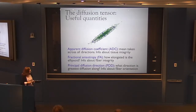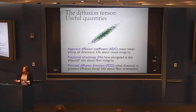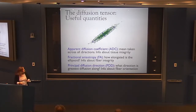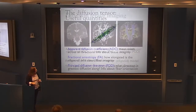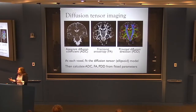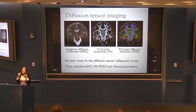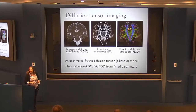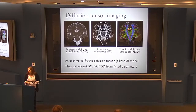The principal diffusion direction is the direction along which diffusion is greatest, which in general corresponds to the direction of the axons — the direction that connections are running in the brain. So it tells us about fiber orientation. In its most vanilla form, within each imaging voxel you fit this tensor model, and then extract properties: images of apparent diffusion coefficient, fractional anisotropy, or principal diffusion direction.